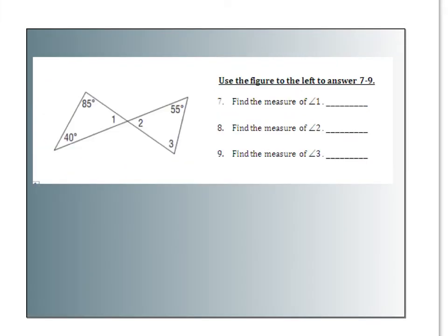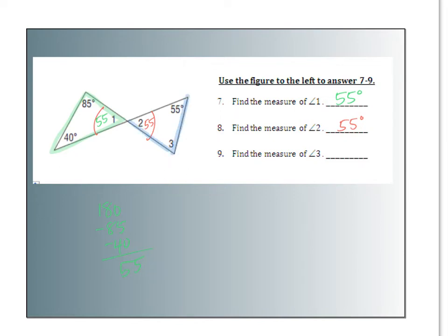Please pause the video and try numbers 7, 8, and 9. Looking at the triangle on the right, those three angles should add up to 180. Doing 180 minus 85 minus 40, the measure of angle 1 is 55 degrees. Angles 1 and 2 are vertical angles, so they have to be the same size — angle 2 is also 55 degrees. For angle 3, using the blue triangle, 180 minus 55 minus 55 leaves 70 degrees.